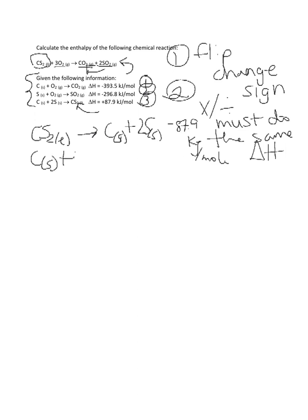Solid carbon plus oxygen gas gives carbon dioxide gas. We did nothing to this – we didn't multiply it, we didn't divide it, we didn't flip it. So we're going to leave delta H as negative 393.5 kilojoules per mole.